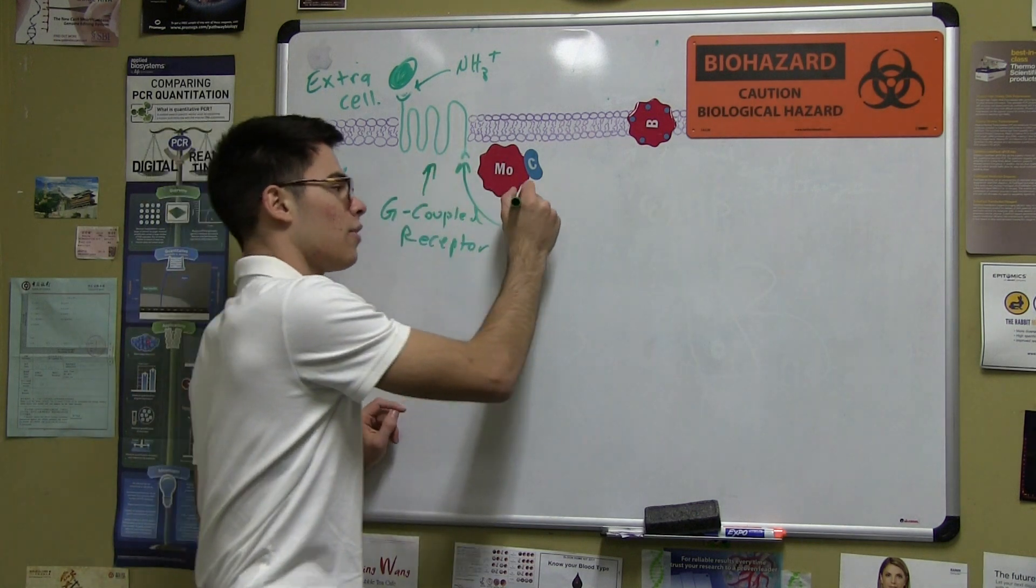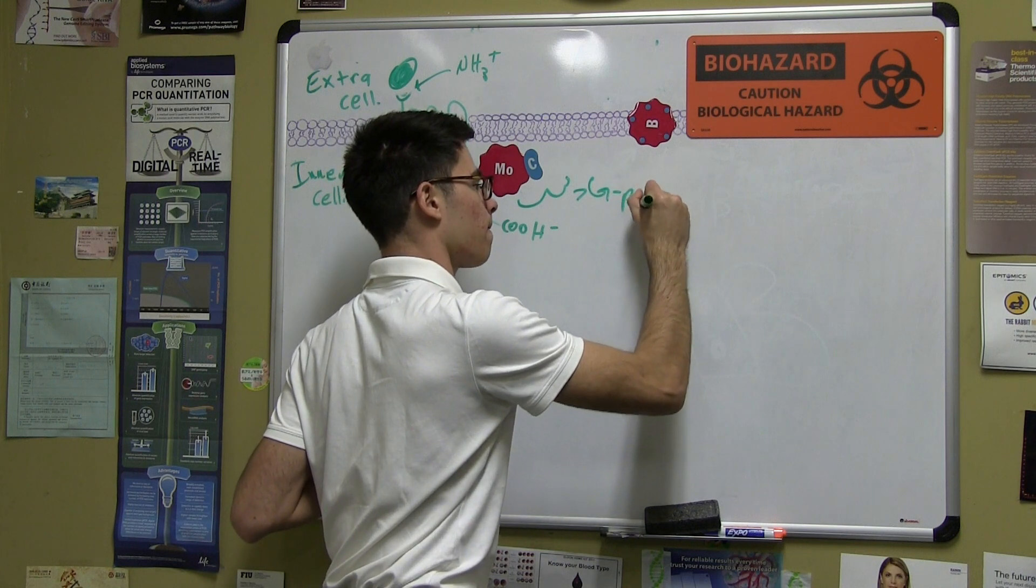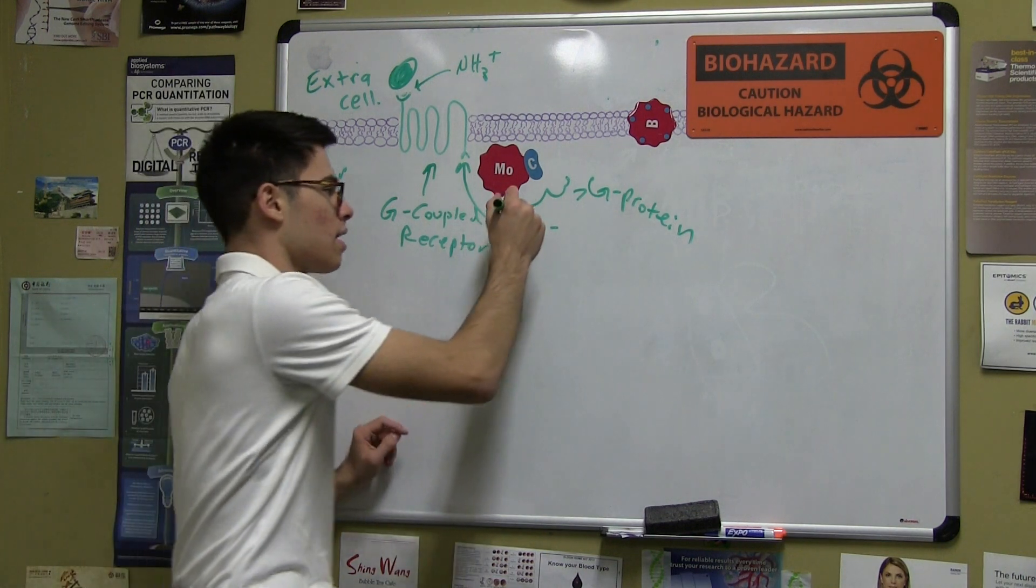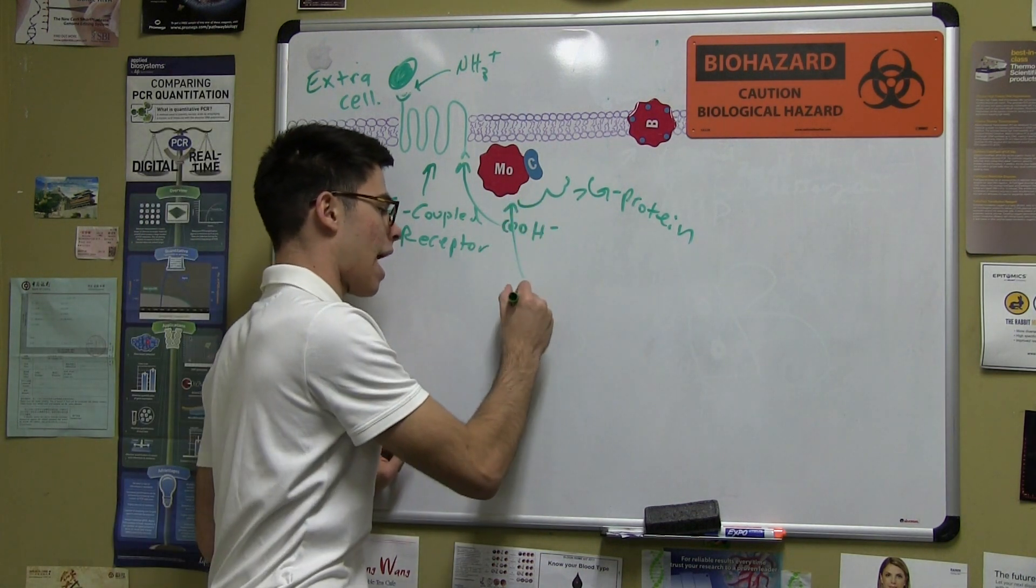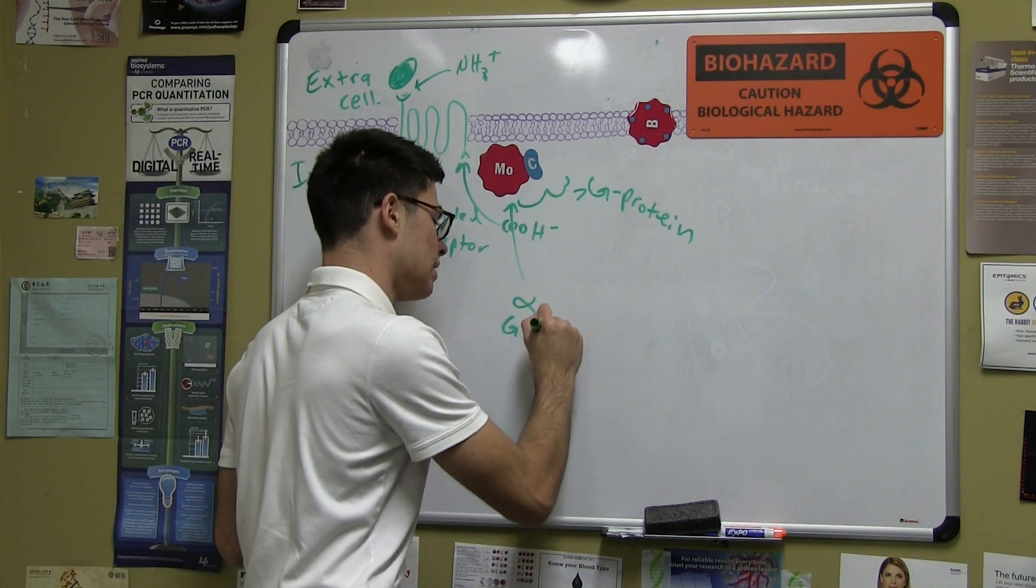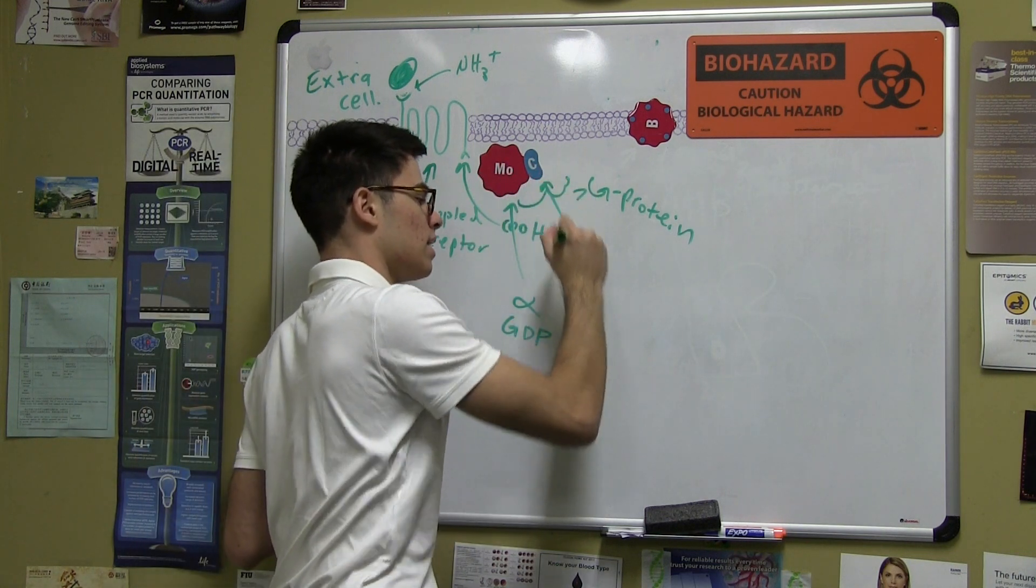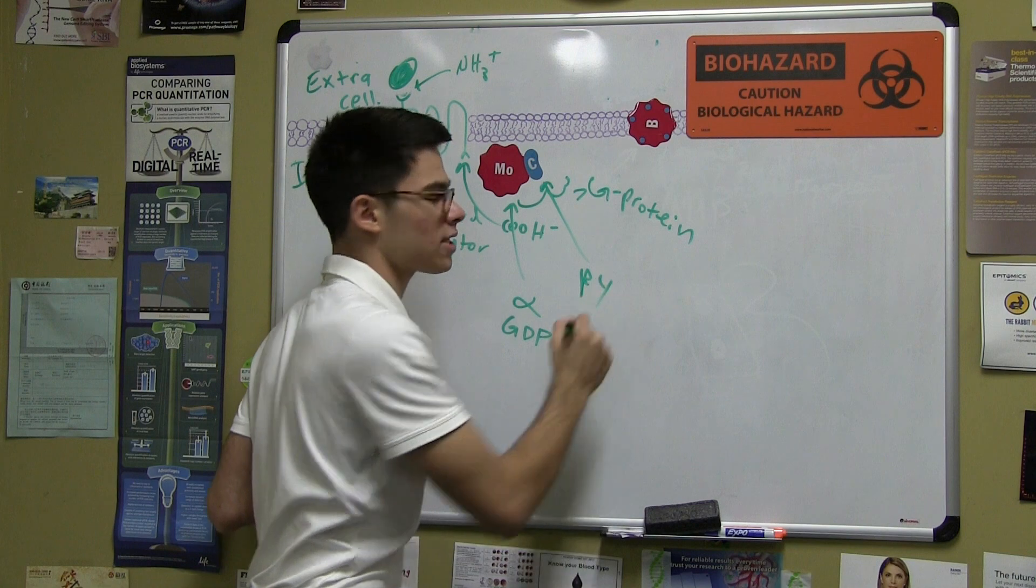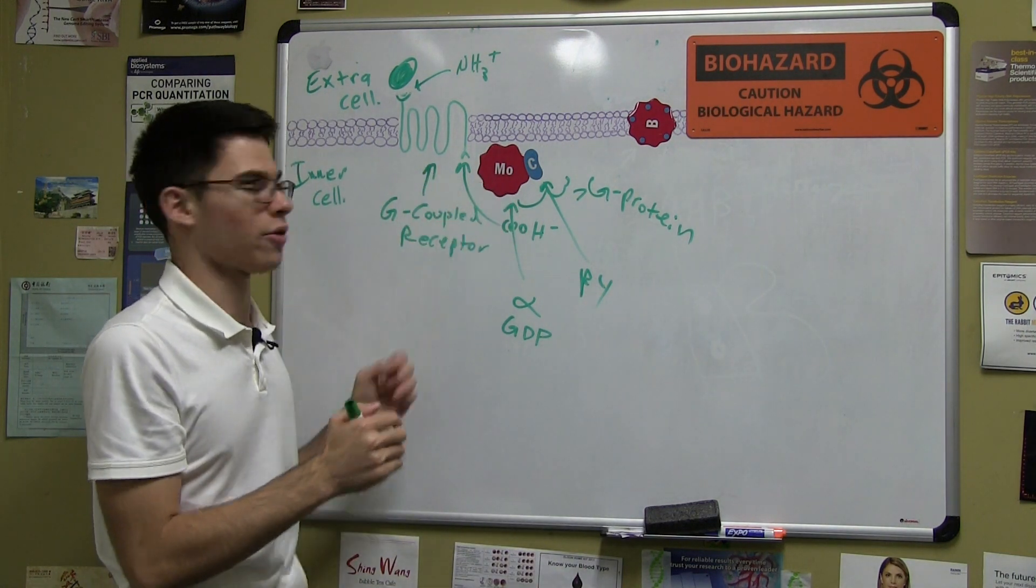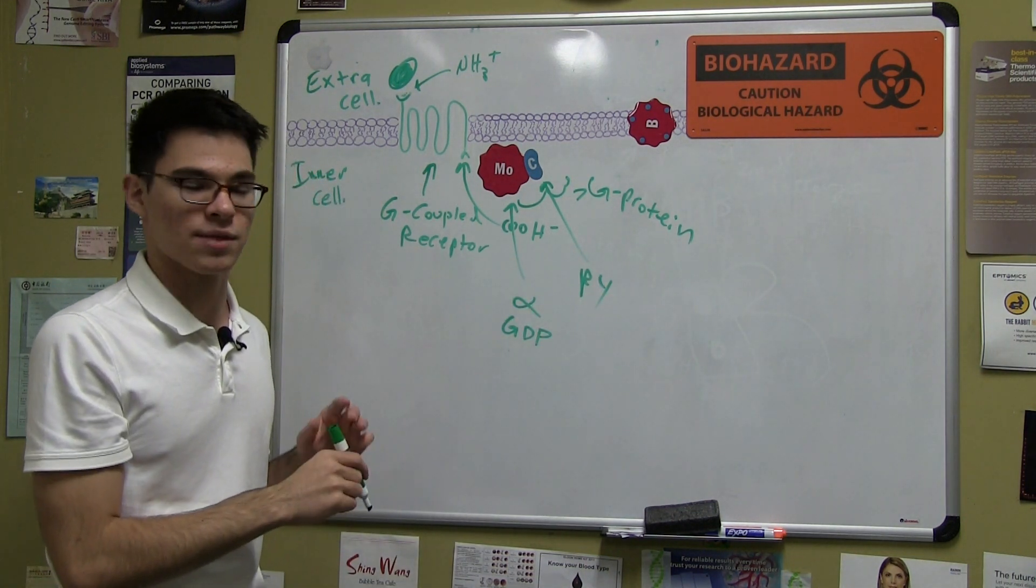So here we have our G-coupled receptor, and here we have our G-protein. Our G-protein is actually a trimer consisting of three subunits. The first is the alpha subunit. And in the inactive form, the alpha subunit binds a molecule of GDP. And then next to the alpha subunit, associated with it, is the beta-gamma subunit, which consists of a beta and gamma subunit, but they really consider them as being the same thing, closely linked together. Our alpha subunit in the inactive state is binding a molecule of GDP.